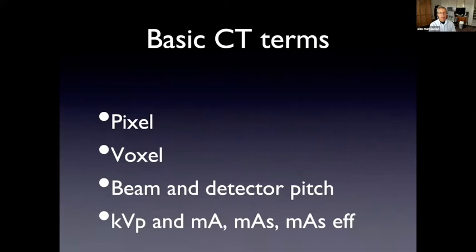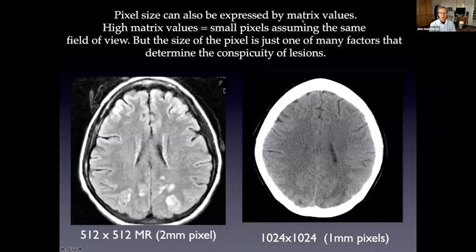So we'll go through now some basic CT terms. I apologize, some of you are very familiar with this, but I just want to put everyone on sort of a good footing so that we can get into some more advanced topics. So pixel size can be expressed in a sense by the matrix value. So if you know the field of view and what the matrix is, the matrix is usually expressed in this way, 512 by 512, here's 1024 by 1024. Now on CT scanner, almost these two values are almost always the same.